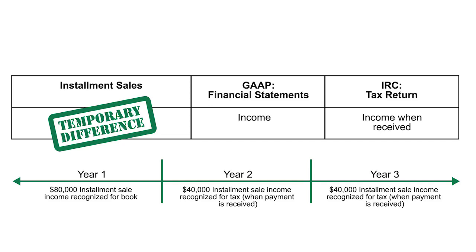For example, an $80,000 installment sale is recognized for book purposes immediately. However, it's going to be paid in two installments — one next year and one the following year. So for tax purposes, we recognize zero in year one, $40,000 in year two when received, and the other $40,000 in year three when received. Note that for tax, over the long haul, we did recognize the $80,000 — the financials just recognized it immediately.